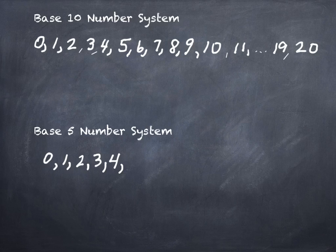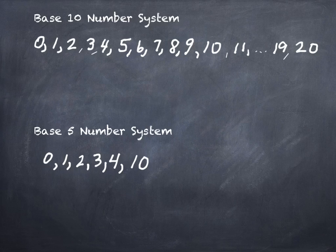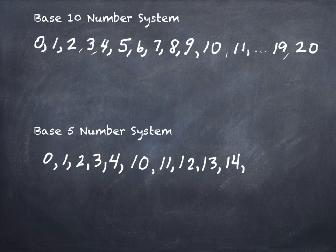What comes next after running out of numerals in base 5? Just like in our system where 10 came next and we had to use two digits, in base 5 we'll write something that looks like 10. But we're not going to call it 10 — we're going to call it 'one zero,' because it's actually equal to five. That way we're careful not to think we're in base 10 when we're not. We keep counting up: one zero, one one, one two, one three, one four — the highest we can go — and then two zero.